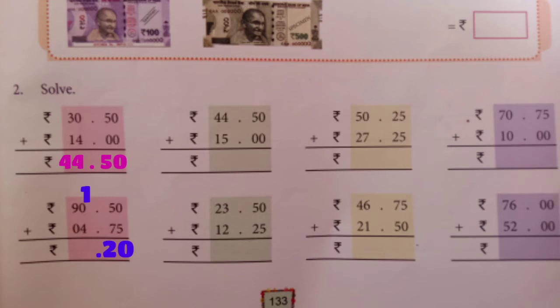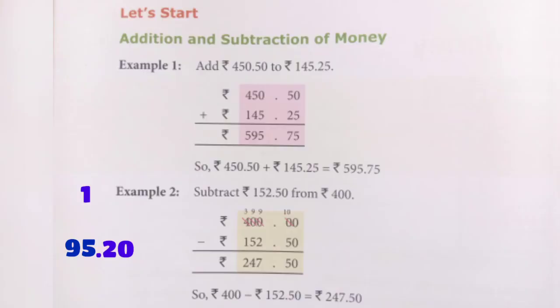The carry over of 1 goes to the rupees. Now 1 plus 4 is 5, and 0 plus 4 is 4 - but with the carry over from paisa we get 5. Then 9 plus 0 is 9, giving 95 rupees and 20 paisa. You can solve the others in the same way.